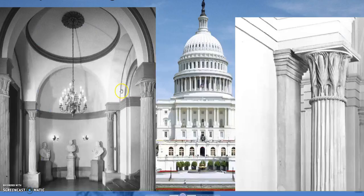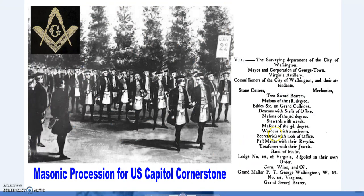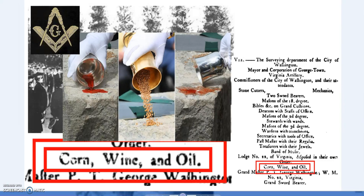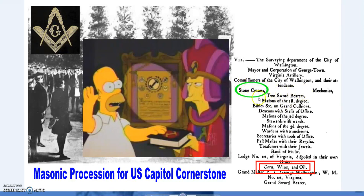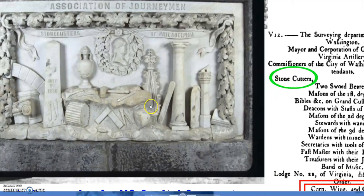The cornerstone of the US Capitol was laid in a Masonic ceremony — there are very strong connections there. Contemporary illustrations show Masons in procession to the laying of the cornerstone, with corn, oil, and wine used in the ceremony. The procession included, among others, stone cutters and mechanics. The Simpsons' 'Stone Cutters' reference aside, stone cutters were real — the Association of Journeymen Stone Cutters of Philadelphia is one example.